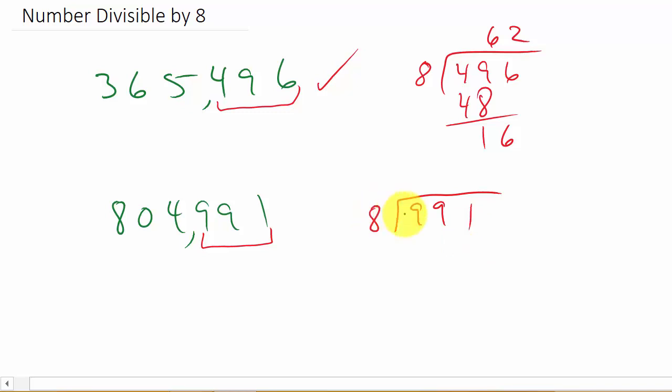So 8 goes into 9 one time. That's 8. 9 minus 8 is 1. Bring down the 9. 8 goes into 19, 2 times. That's 16.